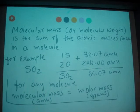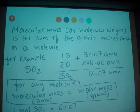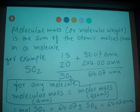For any covalent compound or molecule, one mole of SO2 can be interpreted as 64.07 grams of SO2, or 64.07 amu per one molecule of SO2.